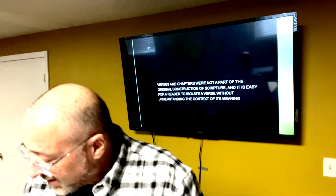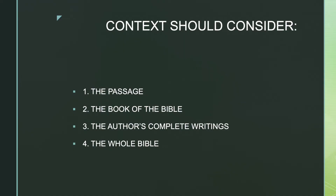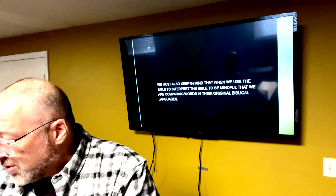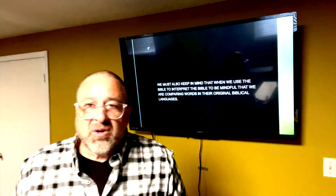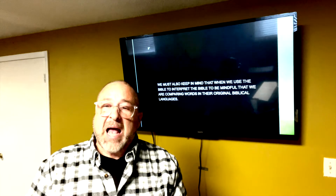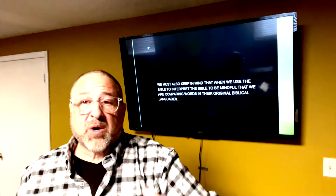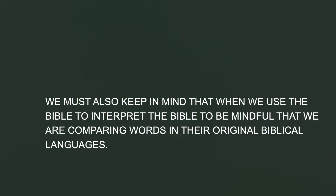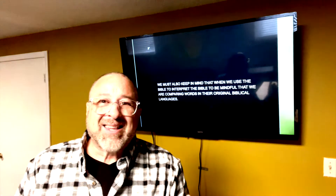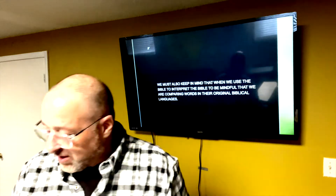When we look at things in full context — the context of the different authors — we begin to get a clearer picture of what was written and its intent, so we can derive more accurate meaning. So we have the passage, the book of the Bible, the author's complete writings, and the whole Bible — all important when looking at biblical context. When interpreting the Bible in light of other biblical passages, also be cautious: the word translated into English may need to be checked against the original biblical language to make sure you're comparing the same words and how they're used in their context.